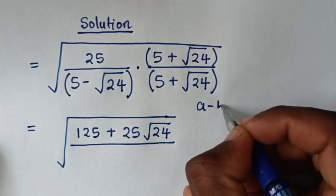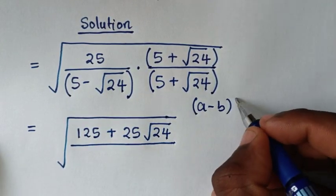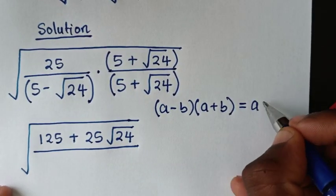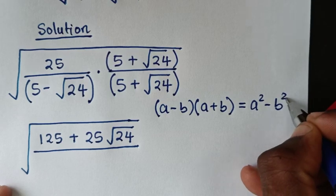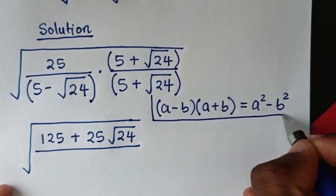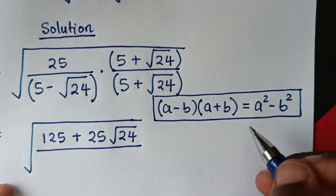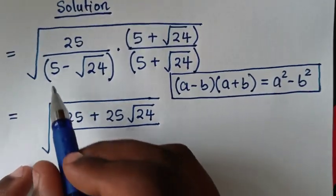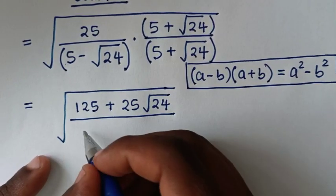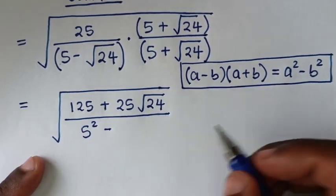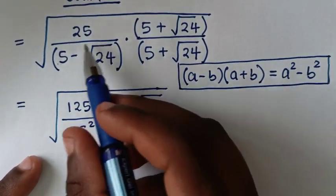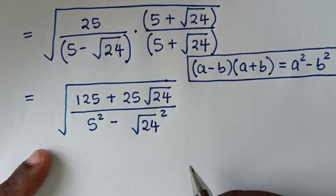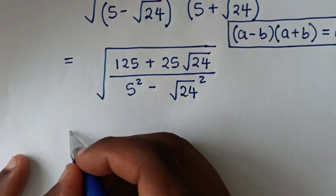The denominator is in the form of (a minus b)(a plus b), which equals a squared minus b squared — this is the difference of squares formula. Applying it here: a squared gives us 5 squared, and b squared gives us (square root of 24) squared.